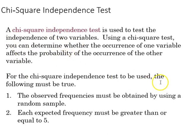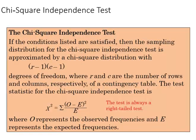For the chi-square independence test to be used, we must meet the following. The observed frequencies must be obtained using a random sample, and each expected frequency must be greater than or equal to 5. If that doesn't happen, then we're not meeting the criteria.